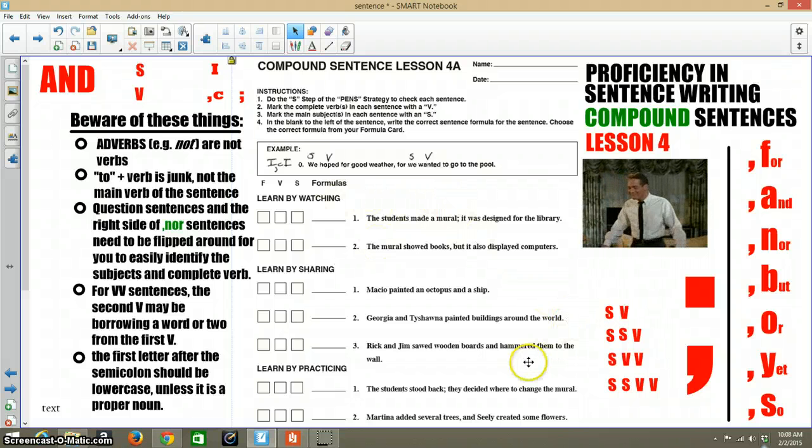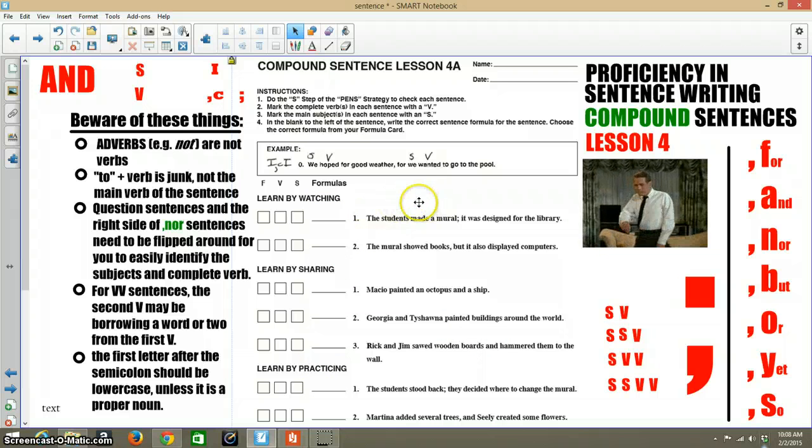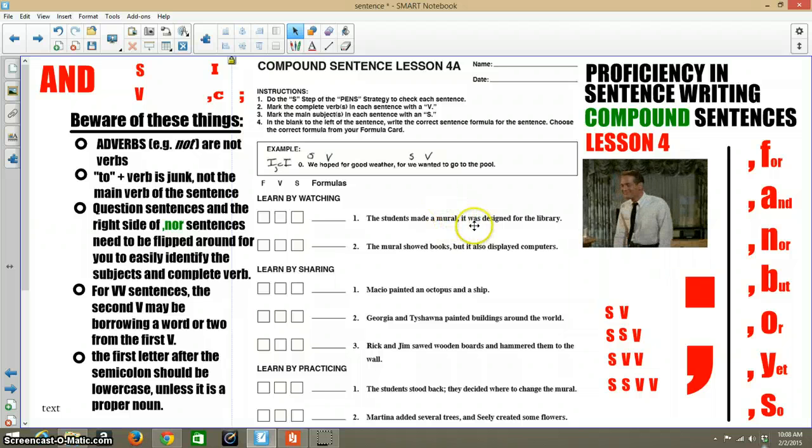On the sheet you'll see everything is written for you, so you're just going to be coding things. You don't have to do any kind of editing of any sort. You're just going to identify what the formula is for each sentence, and then identify subjects and verbs on each side of the punctuation, if there is punctuation.